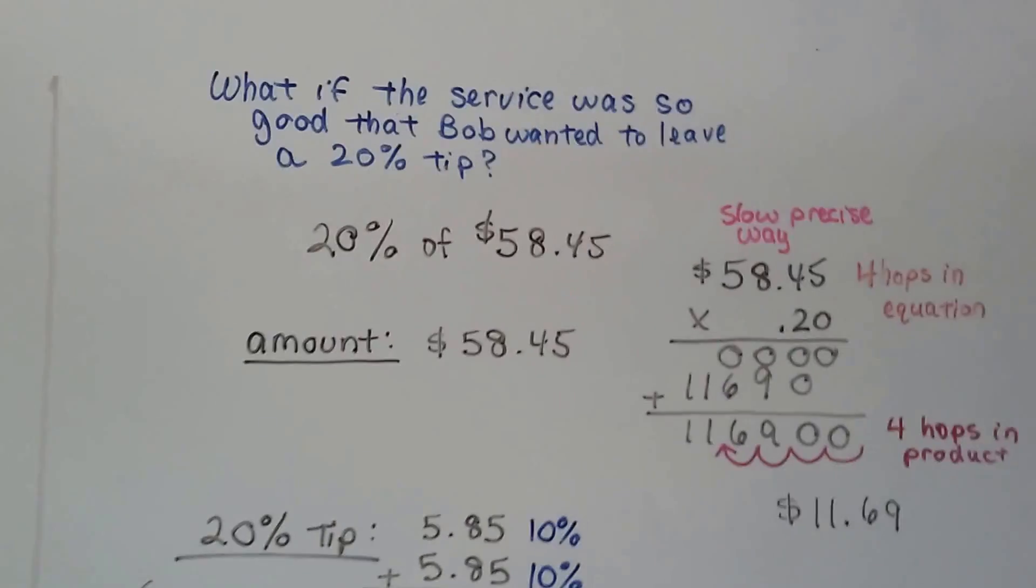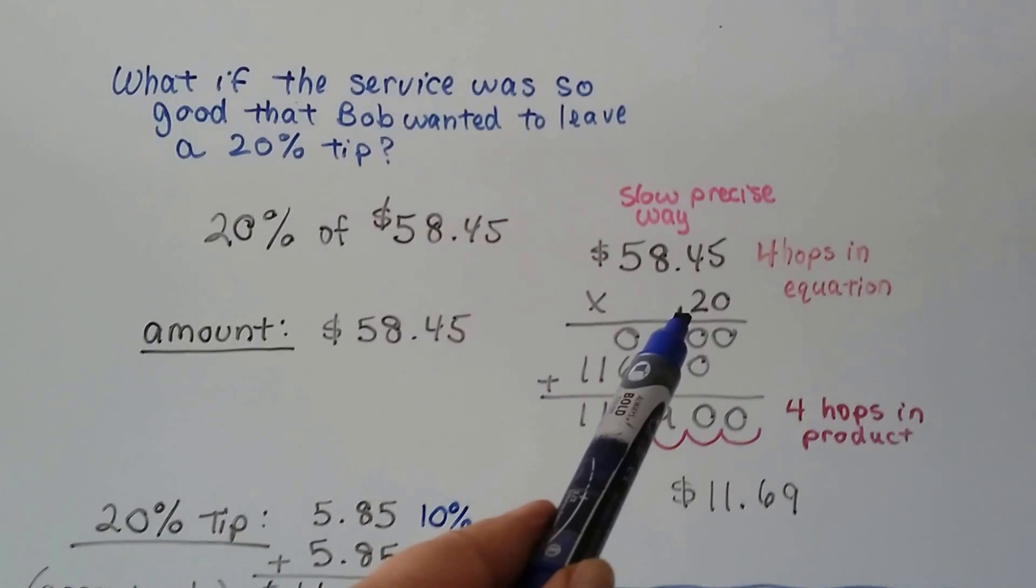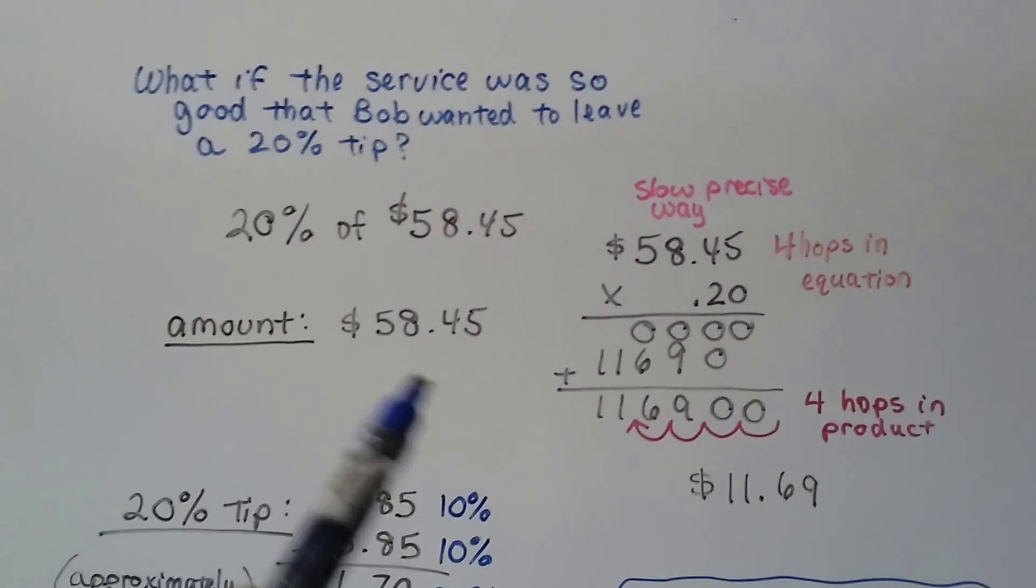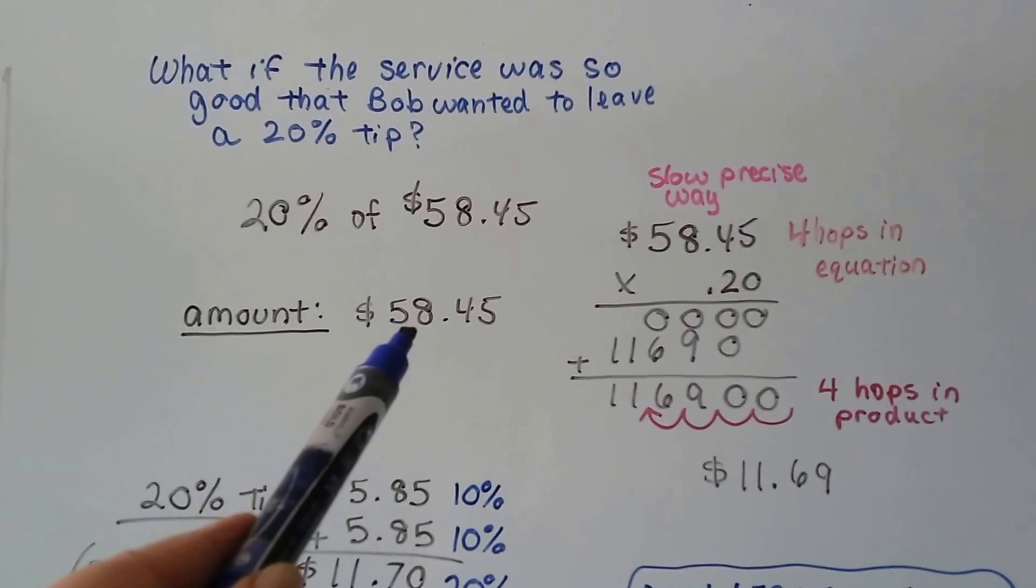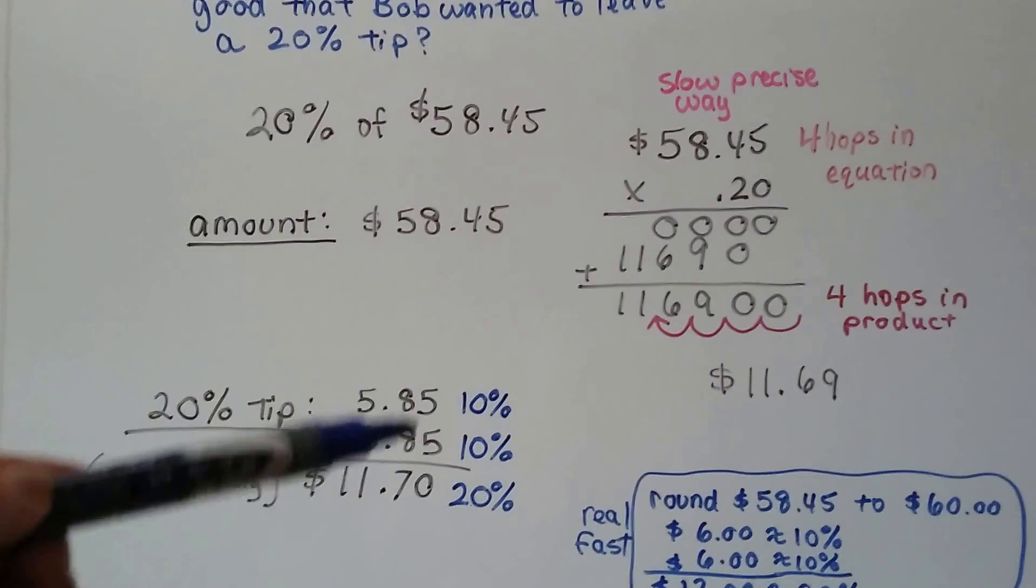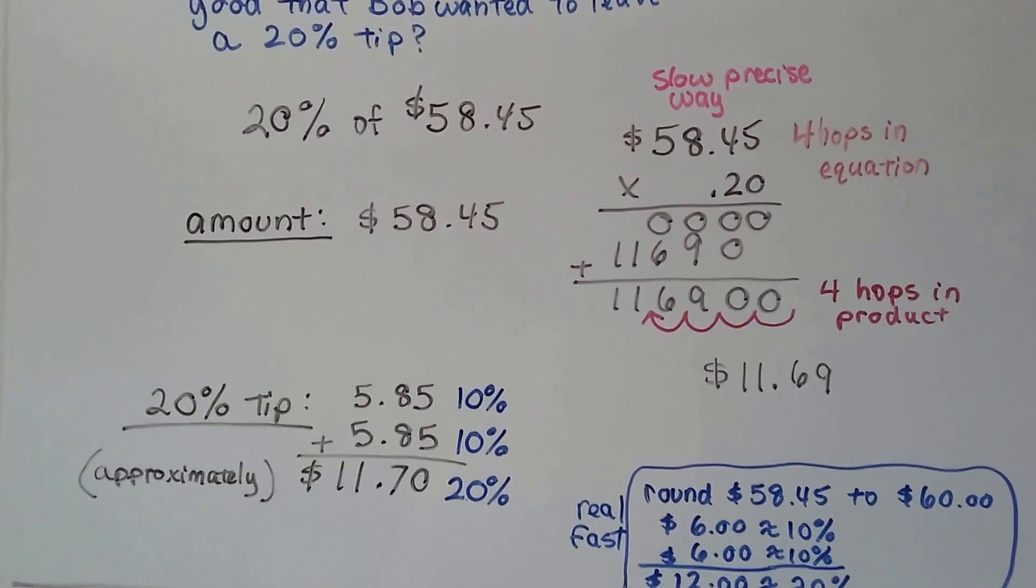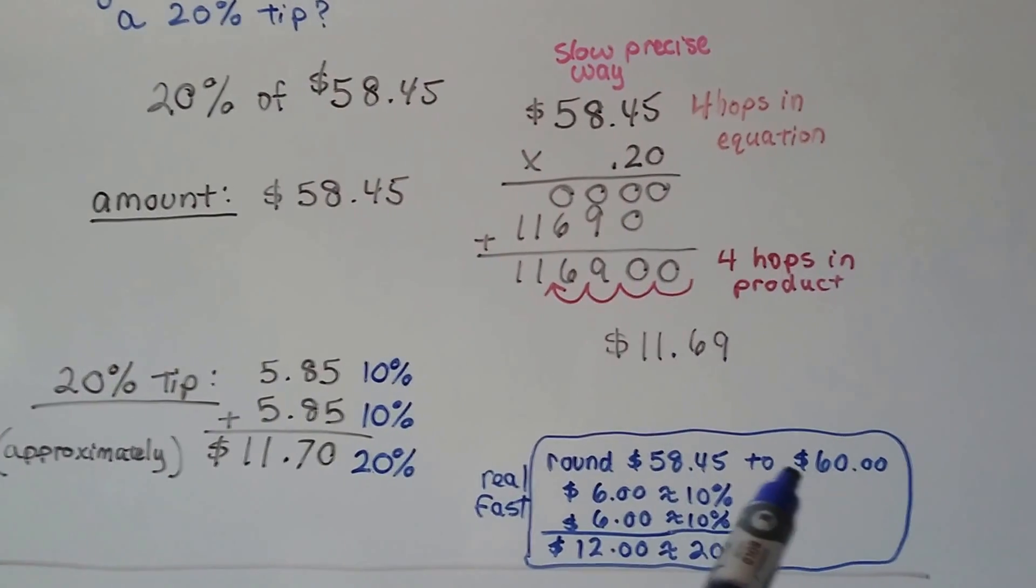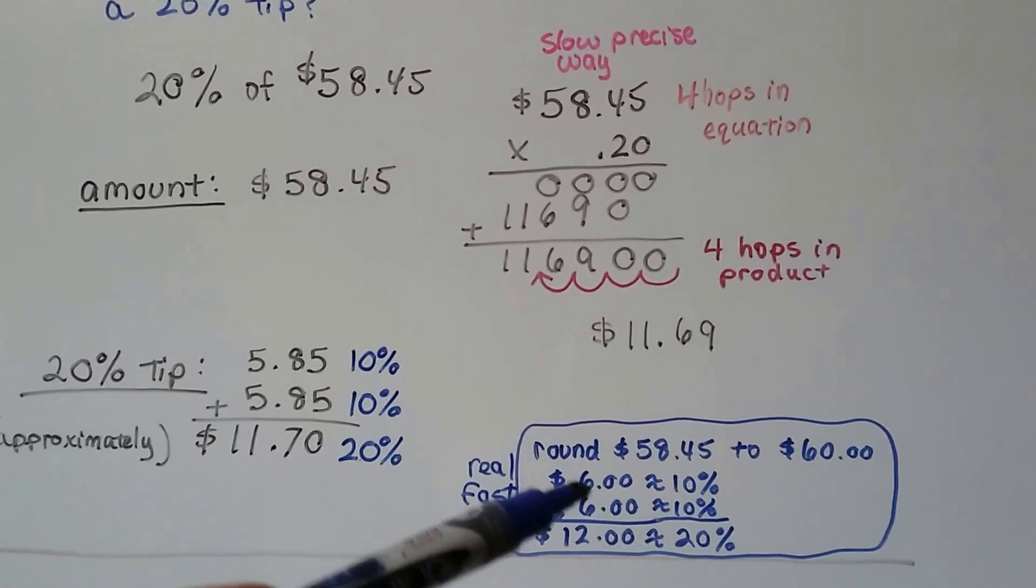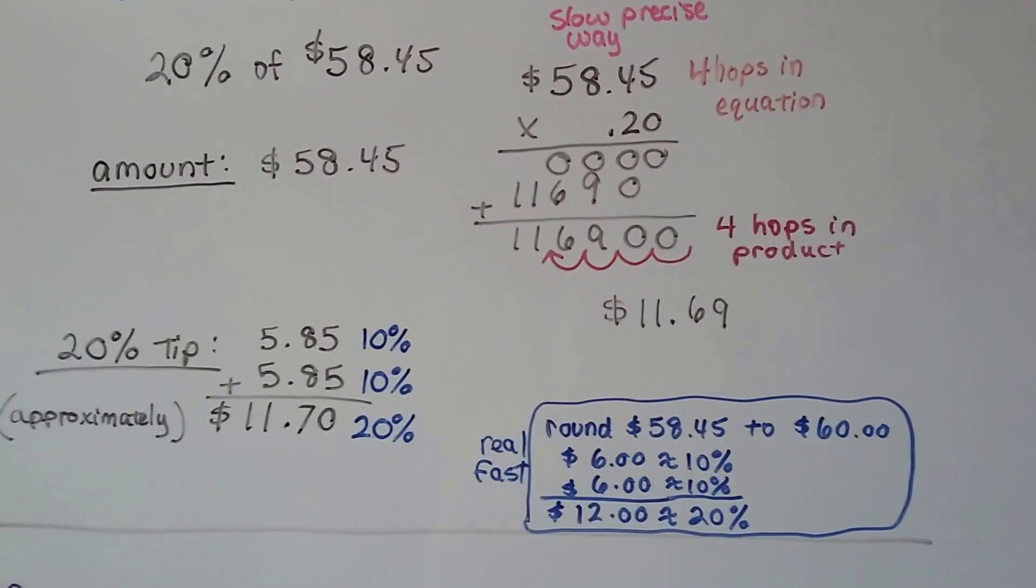Now, the service was so good, you want to leave a 20% tip. We can multiply our bill by .20 or .2 and get $11.69, or we can just move the decimal place over to get about $5.85 for 10%. Add another 10%, so we're doubling it to about $11.70. And the real fast way is rounding that $58.45 to $60 and saying 10% is $6, another 10% is $6, so I'm just going to leave $12. See?